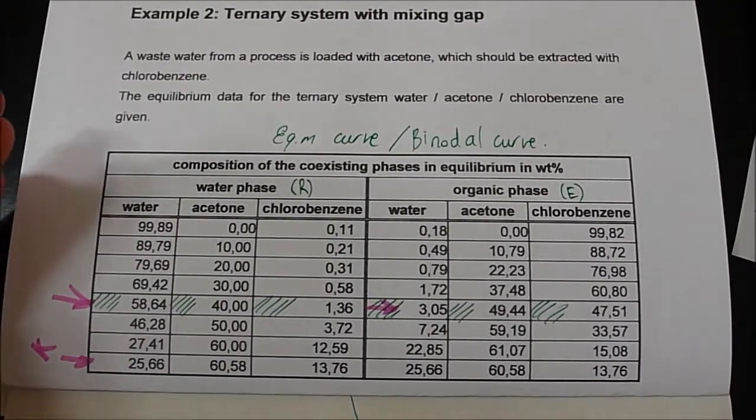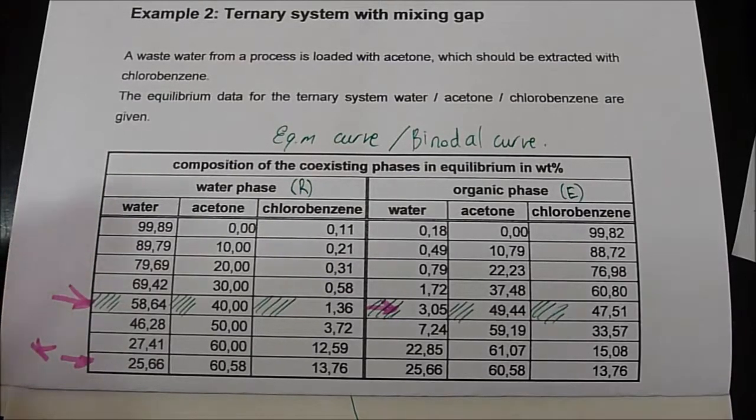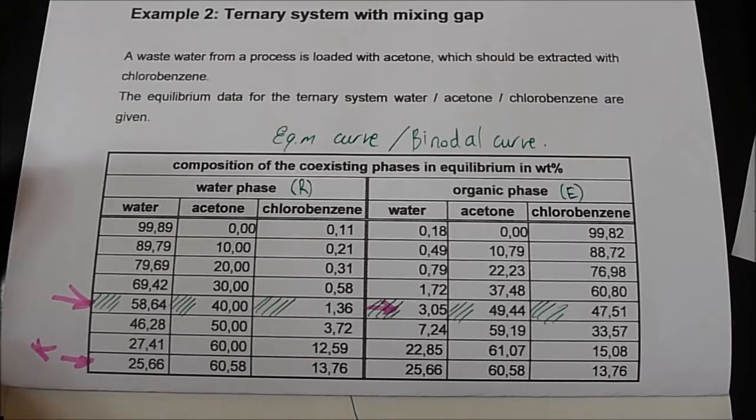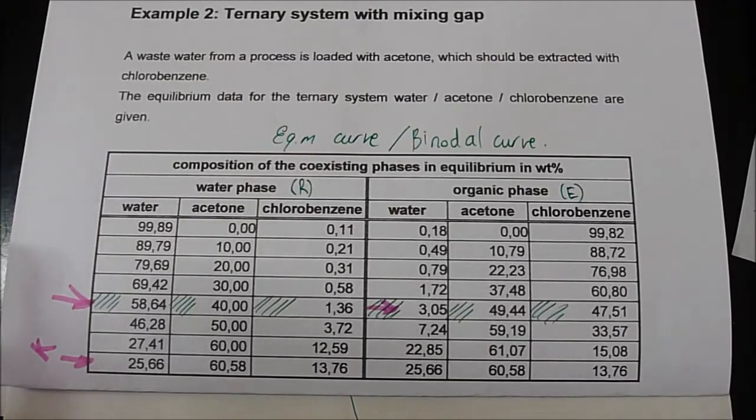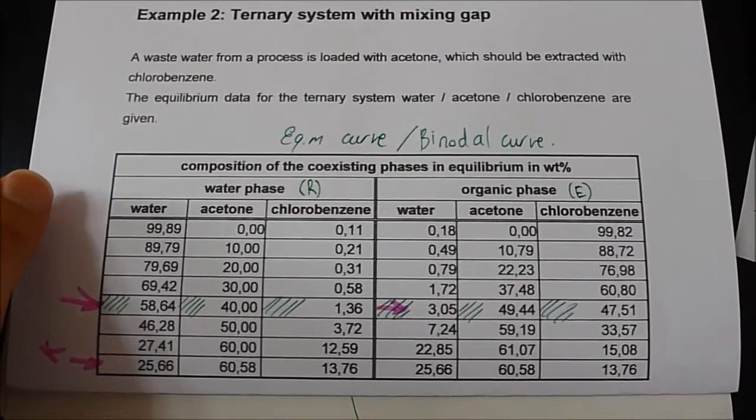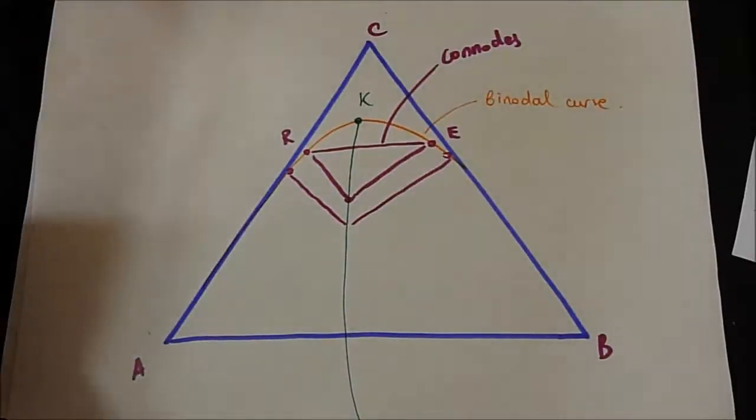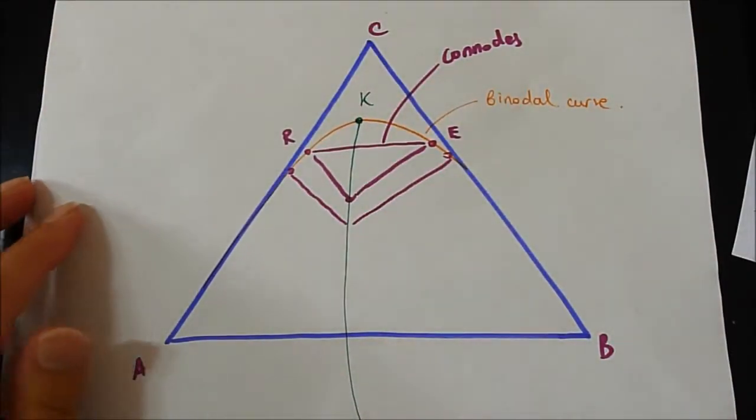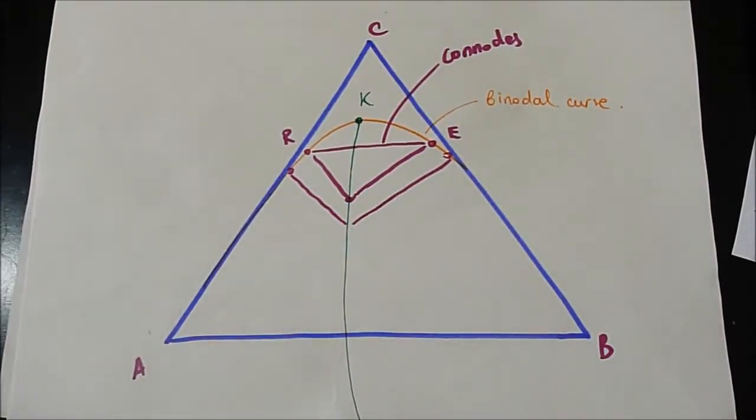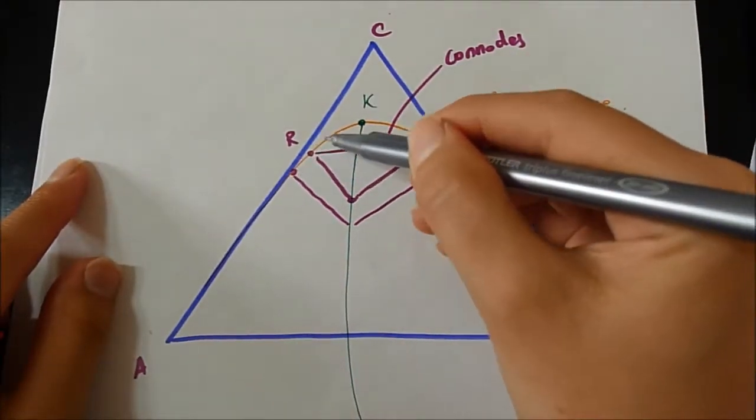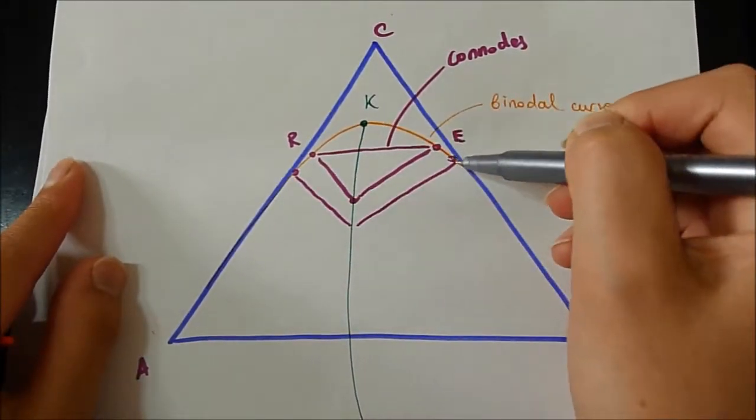In the water phase, there is water, acetone, and chlorobenzene, and in the organic phase, water, acetone, and chlorobenzene are also given. In order to understand this table, we need to draw the points. All the points will lead to creating this beautiful binodal curve.